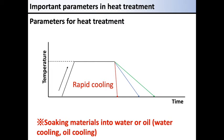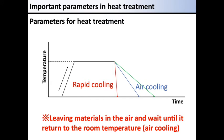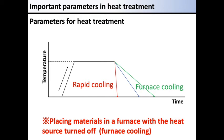Rapid cooling is done by soaking the material into water or oil. This is called water cooling or oil cooling. To perform slightly slow rapid cooling, you may leave the material in the air and wait until it returns back to room temperature. This is called air cooling. For slow cooling, you may place the material in a furnace with the heat source turned off and let it cool. This is called furnace cooling.